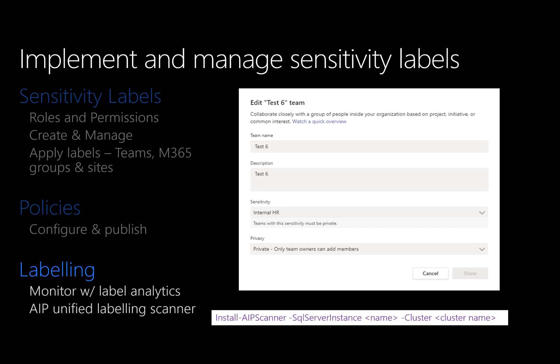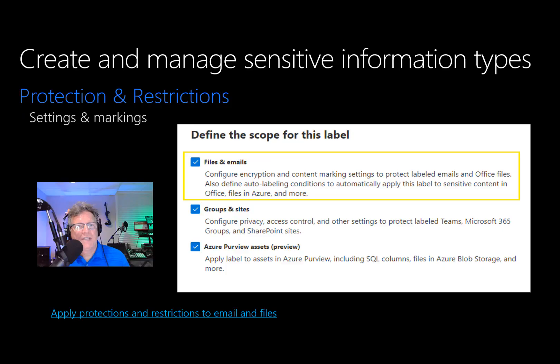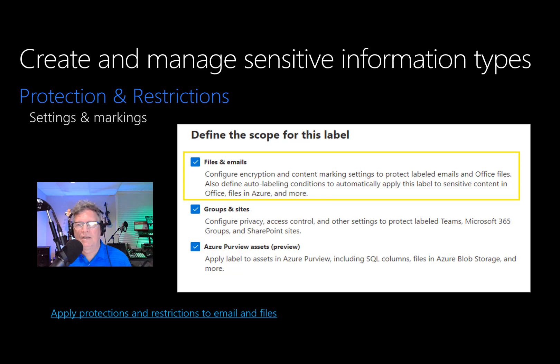The installation and configuration of the Unified Labeling Scanner is done from the AIP Service PowerShell module on a server that will act as the Unified Labeling Scanner in an environment. After fulfilling requirements like service accounts and a SQL Server instance, it's possible to install the Unified Labeling Scanner within the PowerShell command shown. The configuration for the scanner is done in Azure Portal. The Unified Labeling Scanner does not scan and protect in real time — the crawler runs a cycle and repeats.